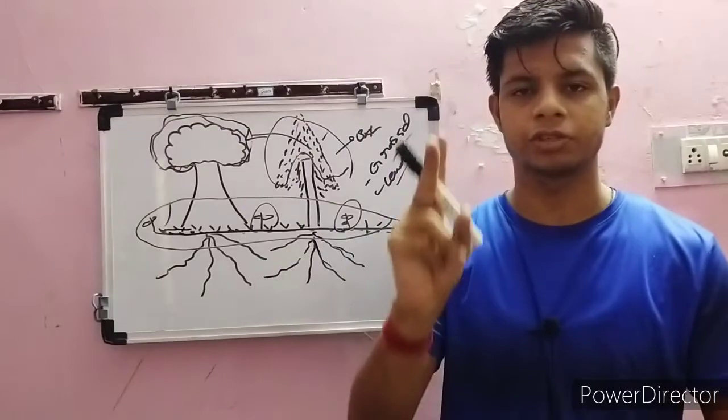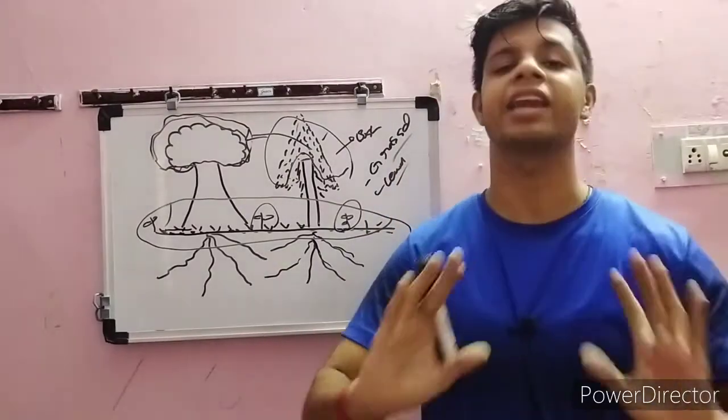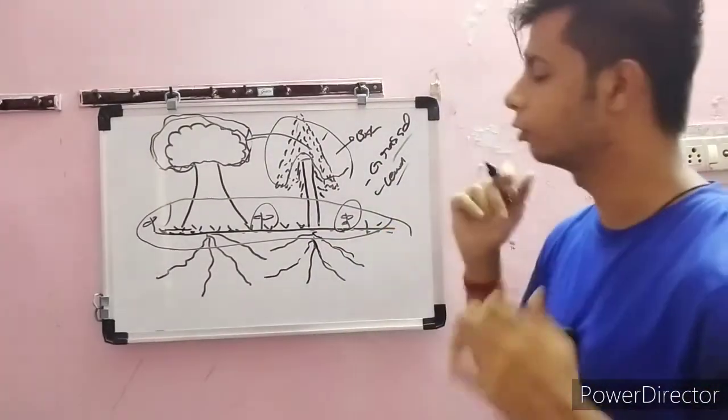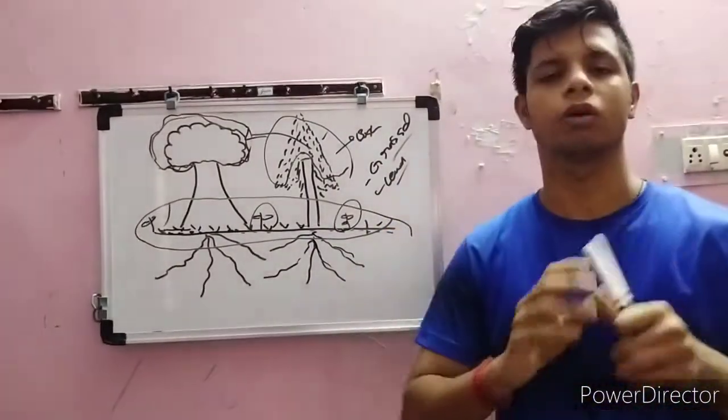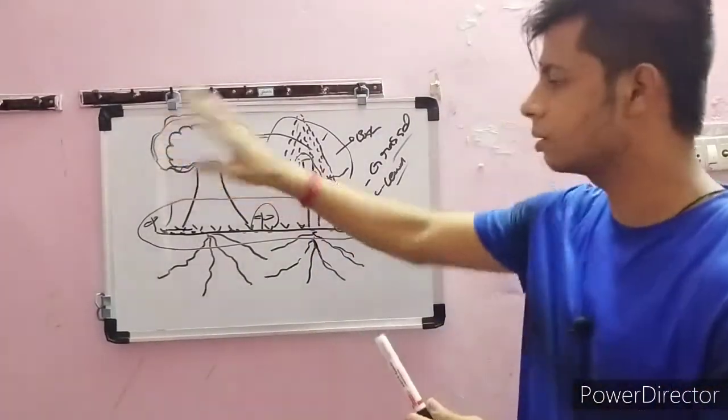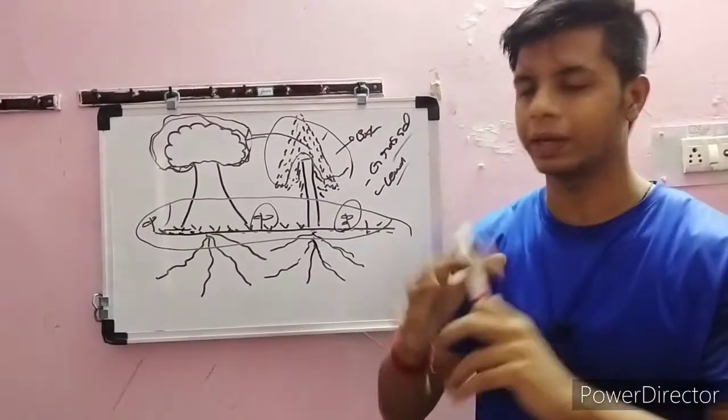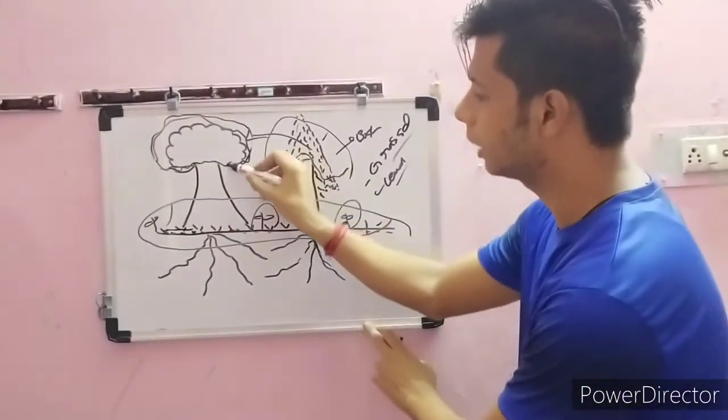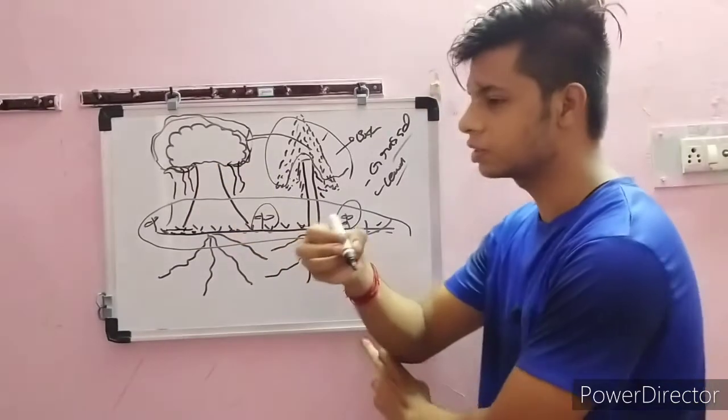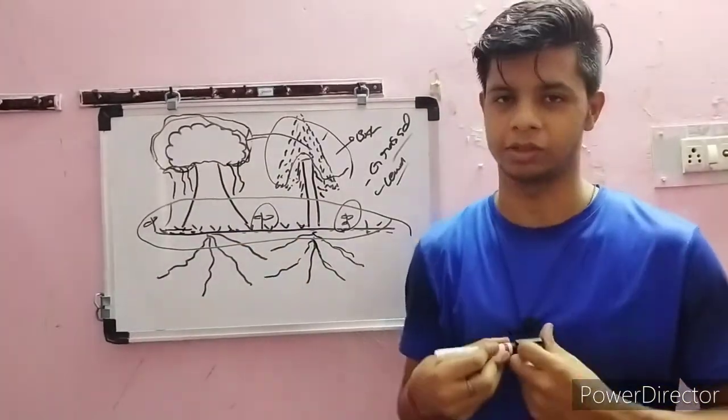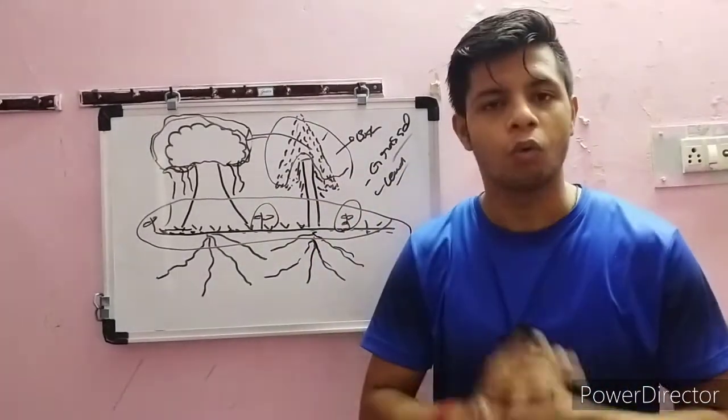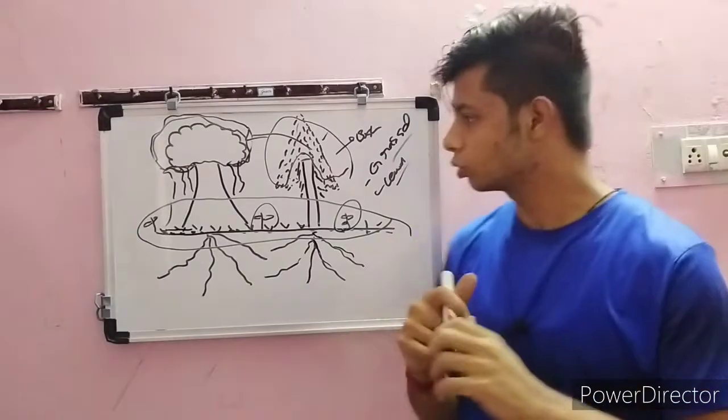One special type of fuel is ladder fuels. Ladder fuels are not always present in every tree - they're present only in specific trees. For example, in the banyan tree, you've seen some types of roots or hanging structures. These hangings are called ladder fuels and they are very special.